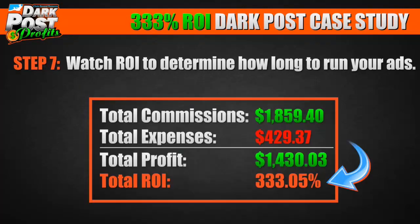Step seven: watch your ROI to determine how long to run your ads. Your ROI is your return on investment. My total commissions were $1,859.40 and my total expenses were $429.37, which means my total profit was $1,430.03 — a total ROI of over 333%. This is called money flipping.